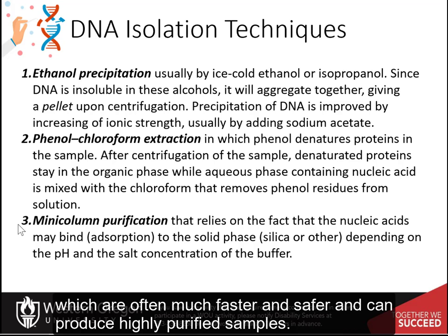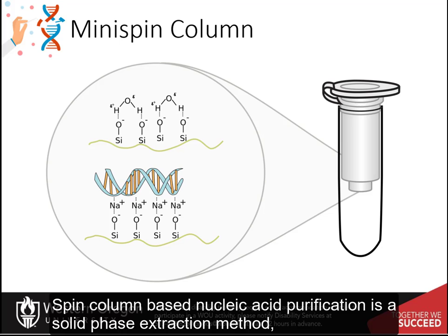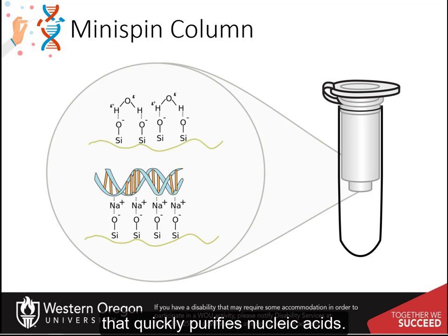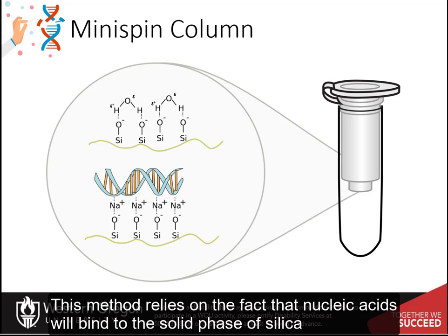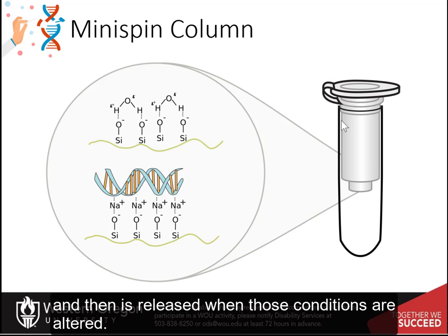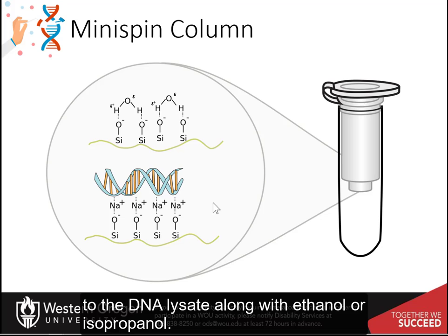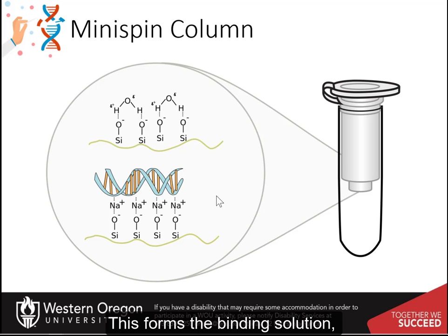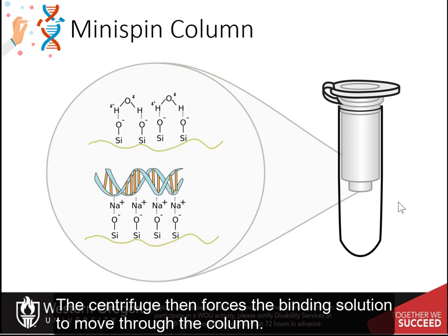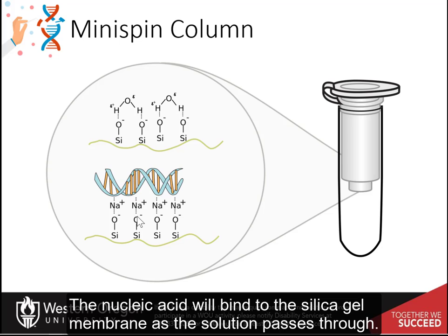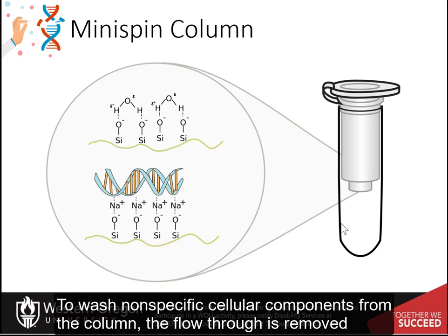Mini-column purification techniques are often much faster, safer, and can produce highly purified samples. Spin-column-based nucleic acid purification is a solid phase extraction method that quickly purifies nucleic acids. This method relies on the fact that nucleic acid will bind to the solid phase of silica under certain conditions and then is released when those conditions are altered. For binding, a buffer solution is added to the DNA lysate along with ethanol or isopropanol, forming the binding solution, which is transferred to the spin column and centrifuged to force the binding solution through the column. The nucleic acid will bind to the silica gel membrane as the solution passes through.